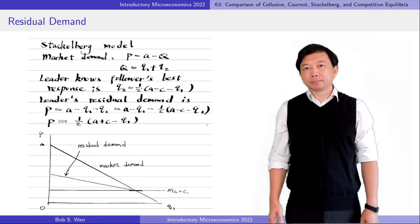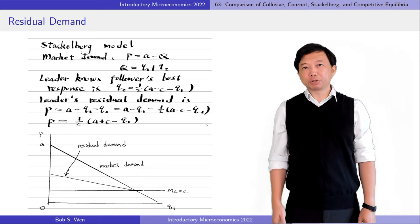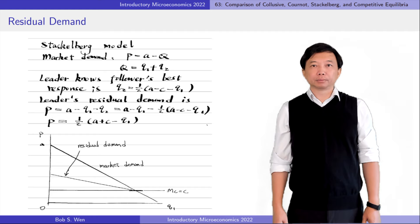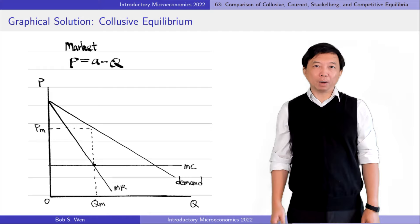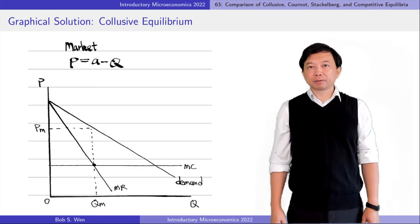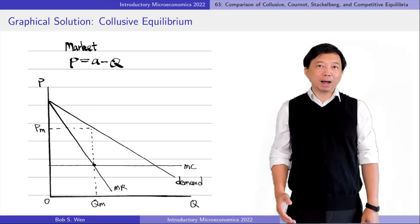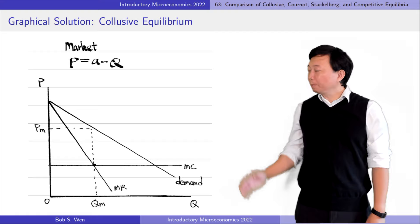After understanding the residual demand, we can graphically investigate the oligopoly firm's profit-maximizing quantity and price in different model settings. We know that collusive oligopoly firms cooperate like one monopoly firm, so we analyze the monopoly firm first. The demand a monopoly faces is the market demand, P equals A minus Q. It produces the output level where marginal revenue is equal to marginal cost. The monopoly equilibrium quantity is Qm and the monopoly equilibrium price is Pm.